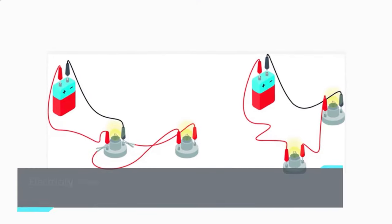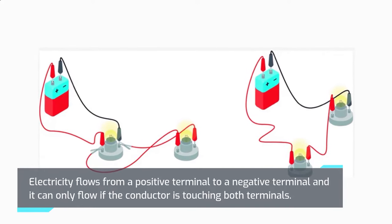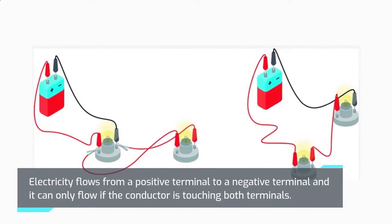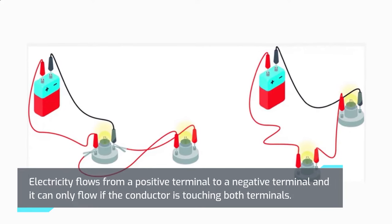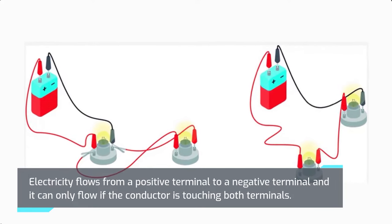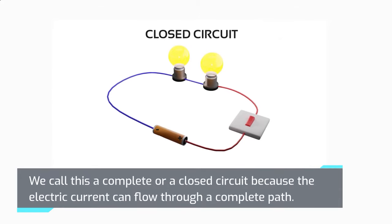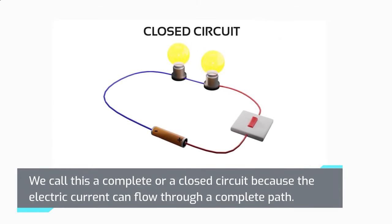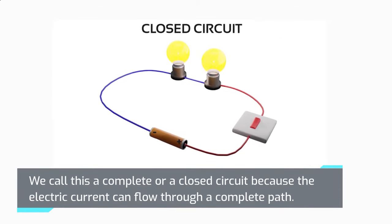Electricity flows from a positive terminal to a negative terminal, and it can only flow if the conductor is touching both terminals. We call this a complete or a closed circuit because the electric current can flow through a complete path.